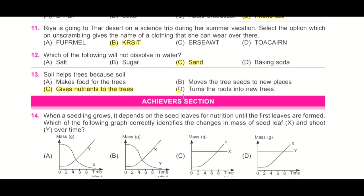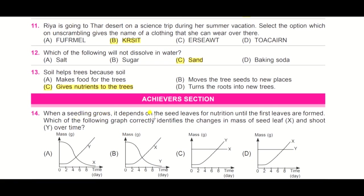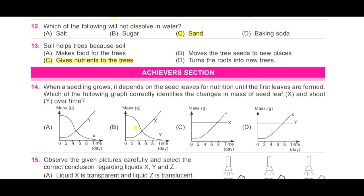Question number 14: when a seedling grows, it depends on the seed leaves for nutrition until the first leaves are formed. Which of the following graph correctly identifies the changes in the mass of seed leaf, that is X, and shoot Y over time? Observe these options very carefully. You need to find the correct graph which identifies the changes in mass of the seed leaf and shoot over a time.